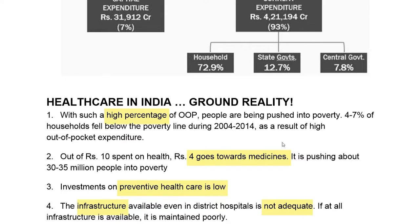What is this out-of-pocket expenditure? This is the amount of money that a person spends from his own pocket excessively. This percentage has been increasing in Indian society for many reasons. This high percentage of out-of-pocket expenditure is pushing many families into below poverty line.